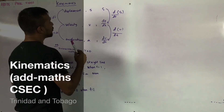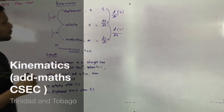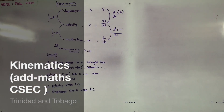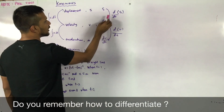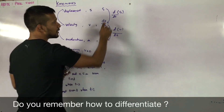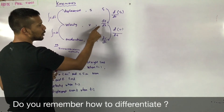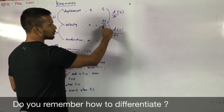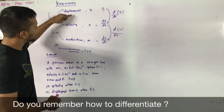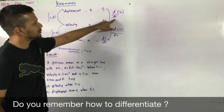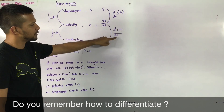So we can link displacement, velocity, and acceleration by differentiation. If I wanted to go from displacement to velocity, all I have to do is differentiate displacement — the differential of displacement is velocity. And the differential of velocity with respect to time is acceleration. To go from displacement to velocity we differentiate with respect to time, and to go from velocity to acceleration we differentiate velocity with respect to time.